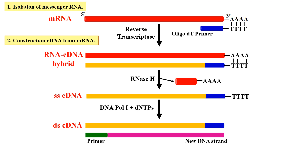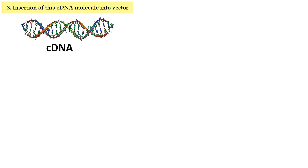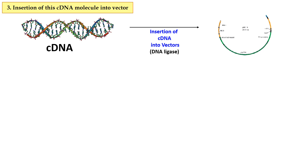So this completes the second step of cDNA library construction. In the first step, you isolate the messenger RNA. Then in the second step, you make the cDNA from this messenger RNA molecule. Now moving to the third step, which is the insertion of this cDNA molecule into the vector. For this, suppose this is the cDNA which we previously made and this is the vector molecule into which you insert your cDNA. For this, you use a special type of enzyme known as DNA ligases, which help in the joining of your cDNA with this vector molecule.